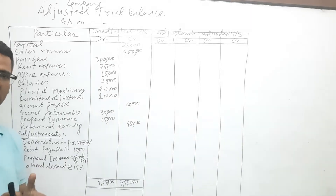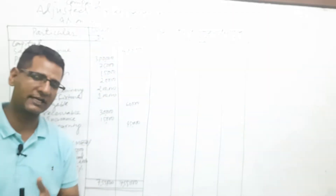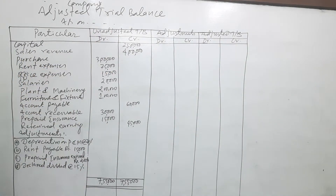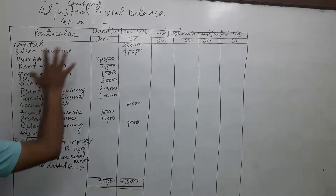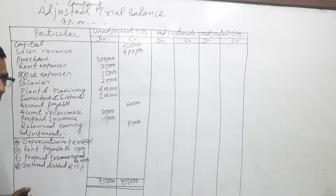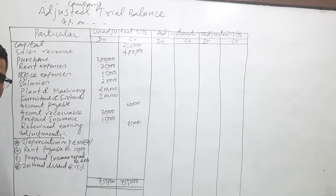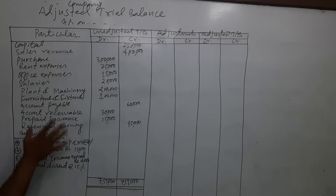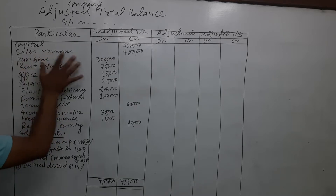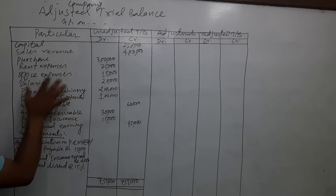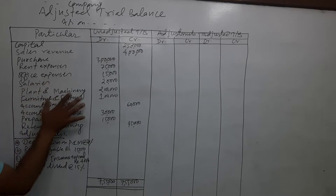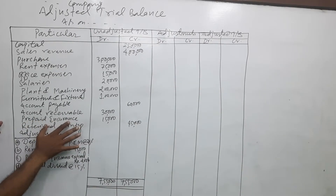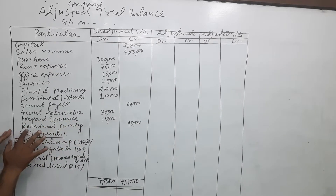It is very important for grade 11 management students and BBS level students. In this case, I will make a question about capital, sales revenue, purchase, rent expenses, office expenses, salary, plant and machinery, furniture and fixtures, account payable, account receivable, prepaid insurance, and retained earnings.